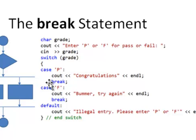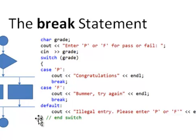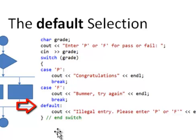We need the break statement here. In C and C++, when we hit the case for P, we execute that code but then would keep falling through and doing all the rest of the code. The break statement causes us to end the switch and fall out to the rest of the code. The default picks up everything that's left over, and it's always good to have a default.